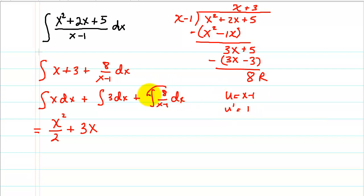And here u is x minus 1. So u prime is 1. And we bring this 8 out front. So now we end up with 8 times the ln of x minus 1. And then for the three integrations, we add our integration constant. And that's about all we can do with this.